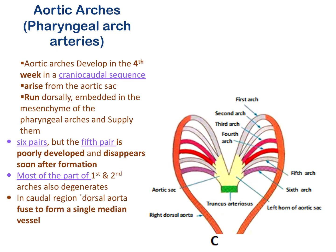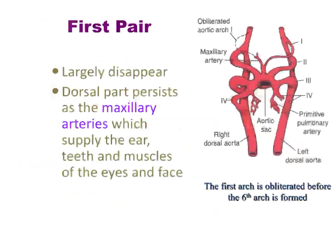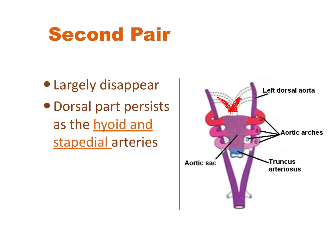Most of the first and second aortic arch arteries will get degenerated, and the fifth aortic arch artery will disappear fully. In the caudal part, the two dorsal aorta fuse to form a single median dorsal aorta. The first pair of pharyngeal arch artery: most of its part will disappear, and the remaining part will form the maxillary artery, which will supply the teeth, muscles of the eye and face.